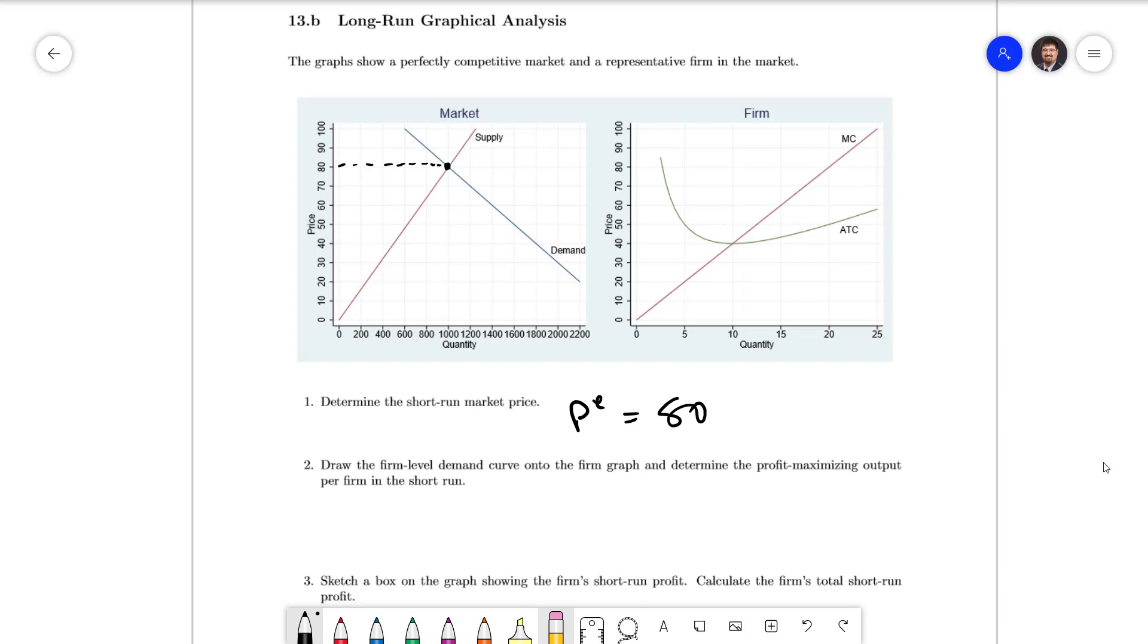Next we want to draw the firm level demand curve onto the firm graph and determine the profit maximizing output per firm in the short run. We're going to take our price of 80 and continue that all the way across to our firm graph. This is why we always want to draw our price axes across the two graphs on the same scale. I'm then going to draw a horizontal line and that's going to be our demand curve on the firm side.